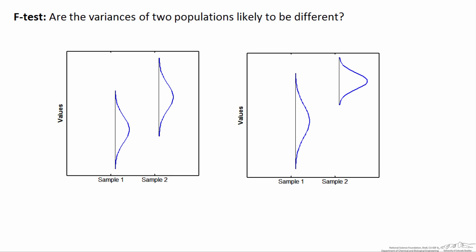All we can take are a series of measurements for each sample. For example, we might take five measurements for sample 1 — we might see a clustering of samples towards the center, and then a couple of outliers. We might do the same thing for this sample 1, and for sample 2, if I collected five samples, it might look something like this.